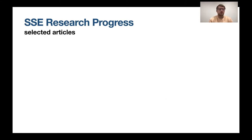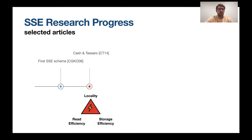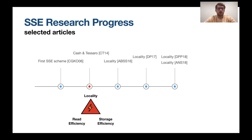Looking at the research progress of SSE, page efficiency on SSDs had not been studied at all yet. In 2006 the first SSE scheme with good security and efficiency was constructed. Then a breakthrough work by Cash and Tesero from 2014 showed it's actually impossible to have locality, read efficiency, and storage efficiency constant at the same time — so we can never be as efficient as a database with no security guarantees if we outsource on HDDs. Despite this, follow-up works try to construct SSE schemes as close to optimal as possible.